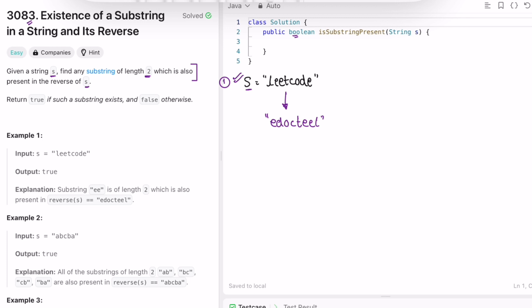First I'm going to form substrings of length 2. Let me add all those substrings in a list. So 'ed' is one substring, then we move the pointer and find 'do' is one substring. Let's do the same for all substrings: 'oc', 'ct', 'te', 'ee', and 'el'. So we find all the substrings of reverse s.